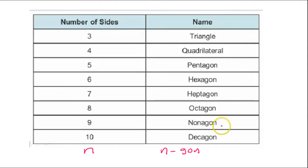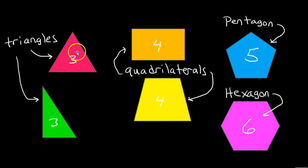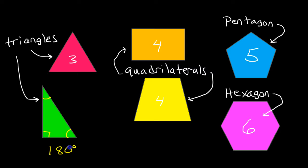A big part of this lesson is about the angles inside of these shapes. For example, when we're dealing with a triangle, if we wanted to know the total of all the angles inside — this angle, this angle, and this angle — we know that the angles inside of a triangle add up to 180 degrees. And hopefully you've learned that if you're dealing with a quadrilateral, the angles inside add up to 360 degrees.